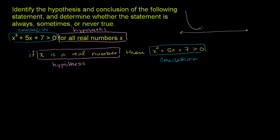If the parabola sits entirely above the x-axis, then for any x you pick, x squared plus 5x plus 7 is always greater than 0. If the parabola dips below, then some values of x will give a result less than or equal to 0. We know it's not never true, because this is an upward-opening parabola — eventually it always yields positive values. So we just need to decide between always and sometimes.